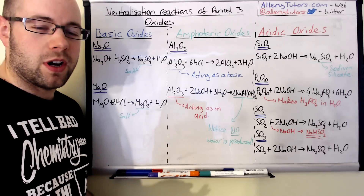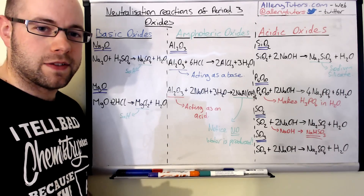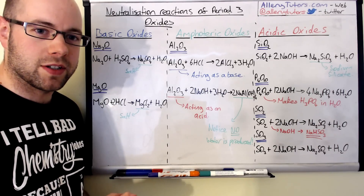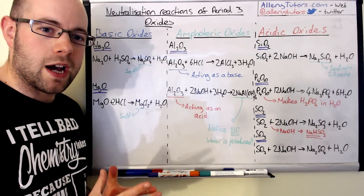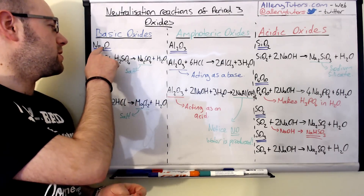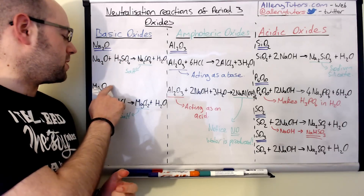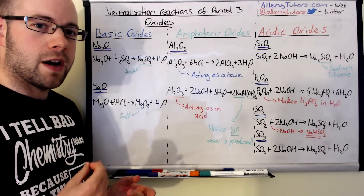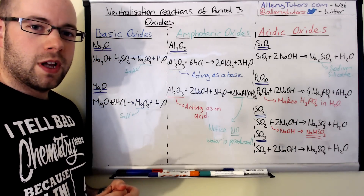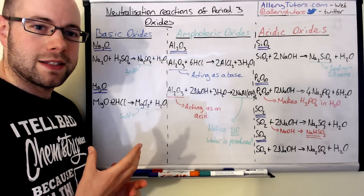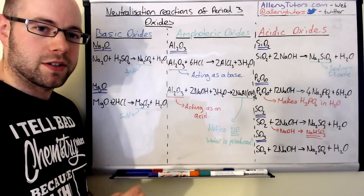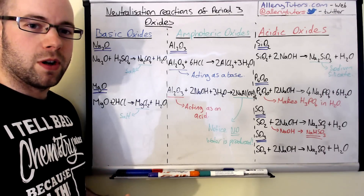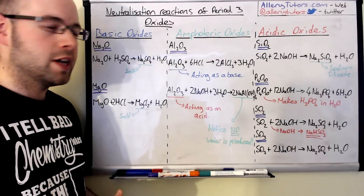We're going to start on the left hand side of the board with the basic oxides. These are ionic compounds — things like sodium oxide and magnesium oxide. These are classed as basic oxides because they form hydroxides when we dissolve them in water.